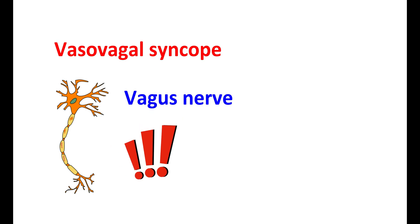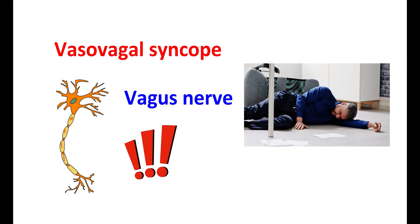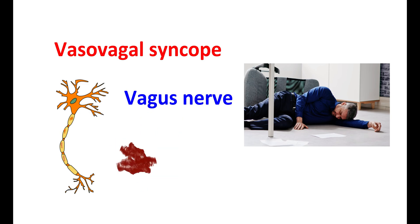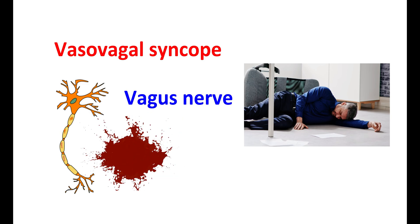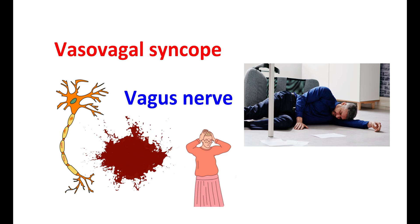The vagus nerve overreacts to a trigger, leading to a drop in heart rate and blood pressure. However, this loss of consciousness is usually for a short period, lasting only a few seconds to minutes, and people recover quickly. Few people may get fainting on seeing blood, and some may experience warning signs like dizziness, lightheadedness, pallor, nausea, and excessive sweating.